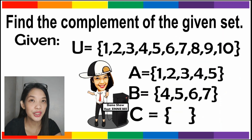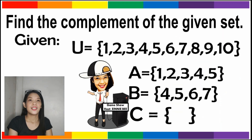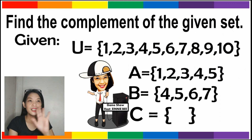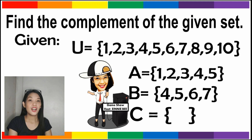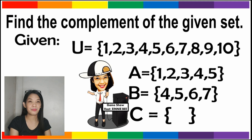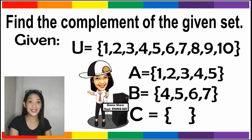To understand it further, let us have specific examples. Find the complement of the given set. From the given, our universal set has the elements 1, 2, 3, 4, 5, 6, 7, 8, 9, and 10. Set A has the elements 1, 2, 3, 4, and 5. And set B has the elements 4, 5, 6, and 7.